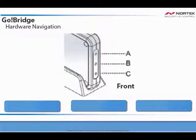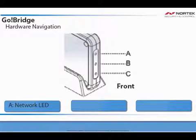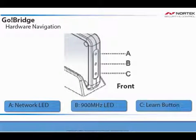On the front side of the communicator, you will see: A, the network LED; B, the 900 MHz LED; and C, the learn button.